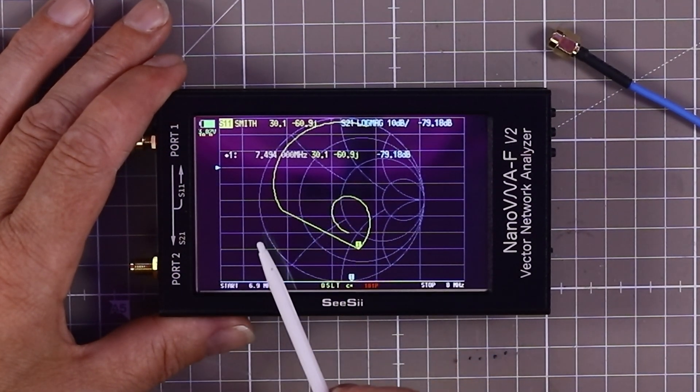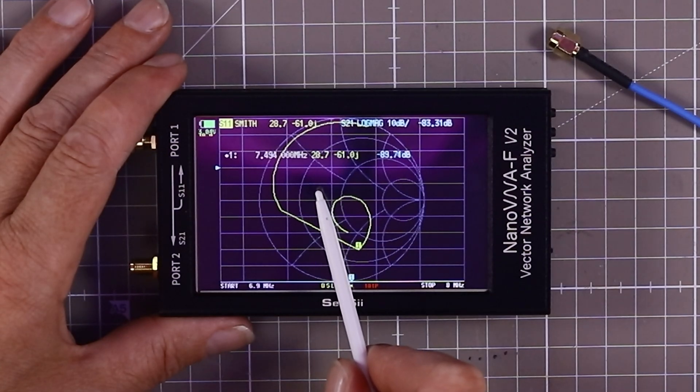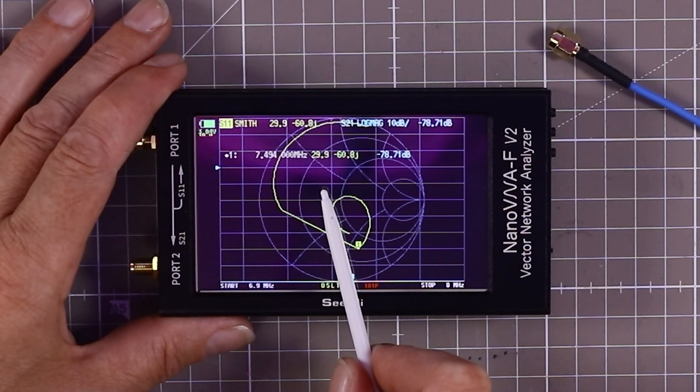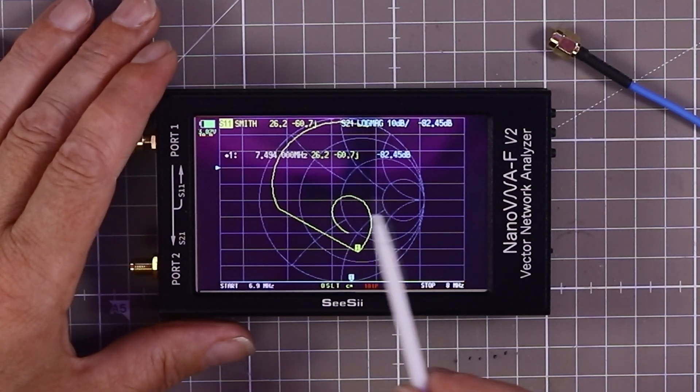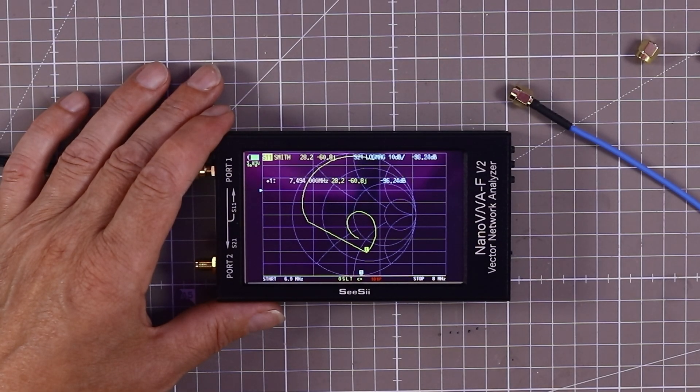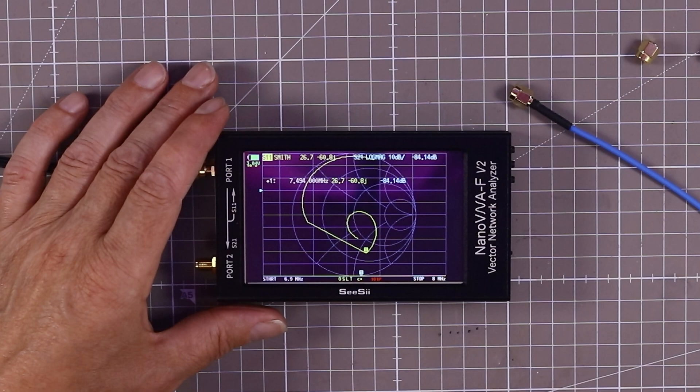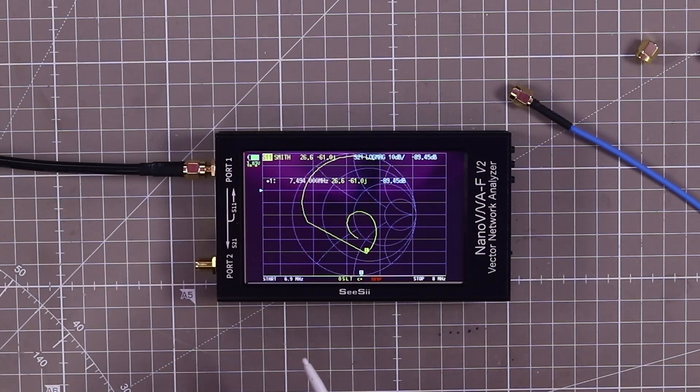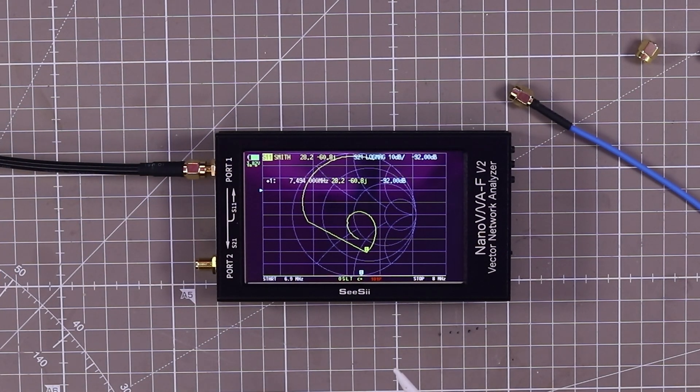So there you are, so we've got 29 picofarad capacitance. So if you put a 29 puff capacitor across the bottom of the feed, it will bring that back to one to one. Oh, so you can use it to know how much capacitance or inductance you need to add in order to bring SWR down to zero? Yeah. Fantastic. Smith charts are great things, but you know, I'm - how long ago did I use those? All right, interesting or not, as I said that was it on the screen.